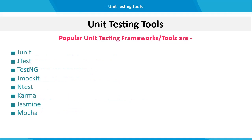Several unit test frameworks and libraries are available in the market. Some popular unit test frameworks for Java developers are JUnit, JTest, TestNG and JMeter. NUnit is a library for .NET developers. Karma and Jasmine are libraries for Angular developers, and Mocha is a library for Node.js developers.